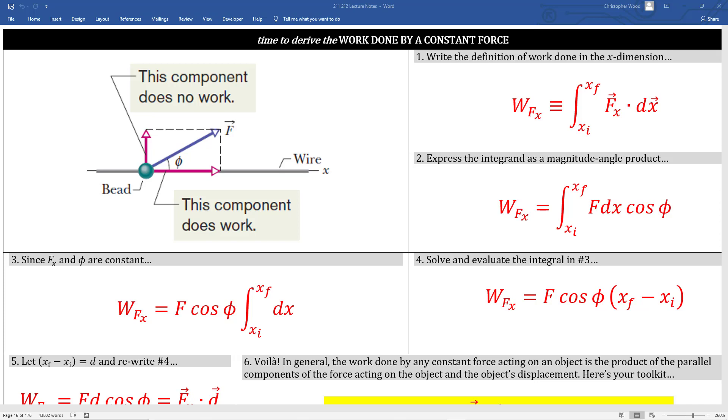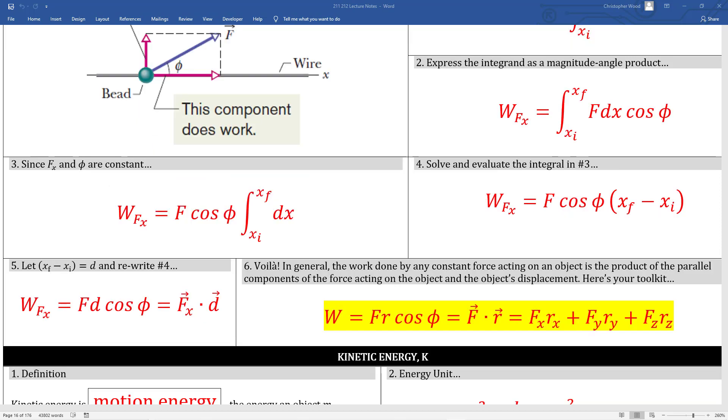Box 1, we're starting with the basic definition of work and we're using a subscript X because we'll limit ourselves to the X dimension only and we'll generalize it later. Box 2 is the copy and paste of box 1 except we're using the magnitude angle version of the dot product. Box 3, in this special case, the applied force is constant and the angle between the force and the object's displacement is constant as well. So we bring them to the left side of the integrand. The integral of dx is X, we evaluate it and that's how we end up with box 4.